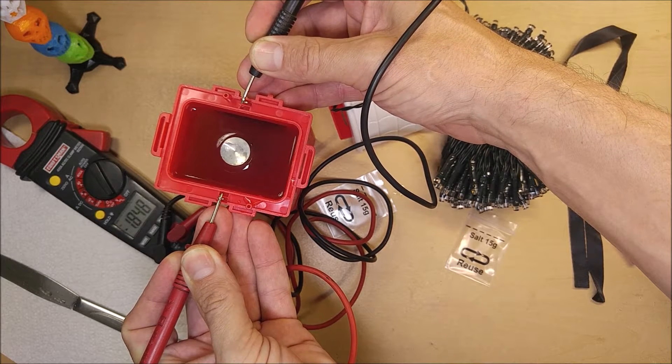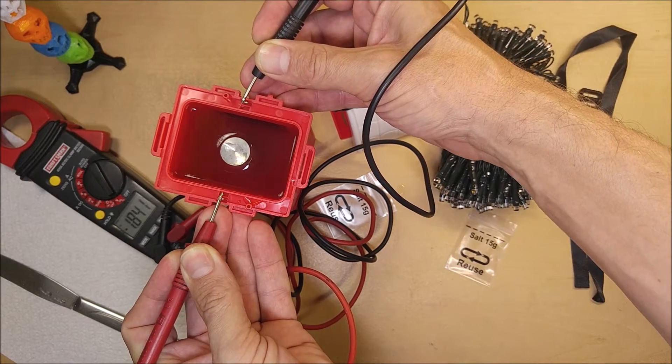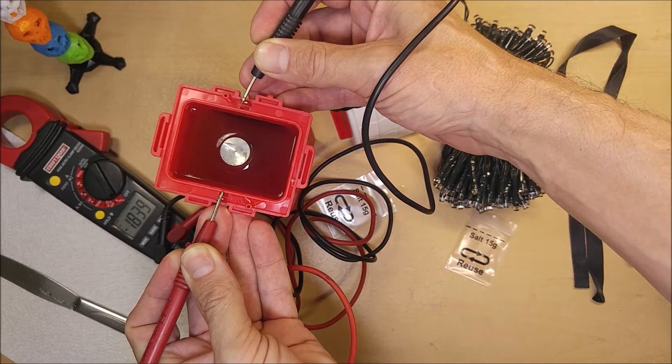So we're getting 1.8 volts with the salt just dissolved in there. Let's see if we can mix it up a little bit more and get more voltage.